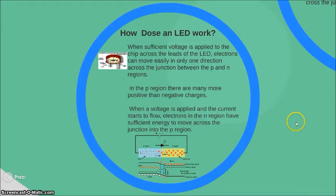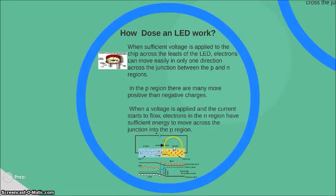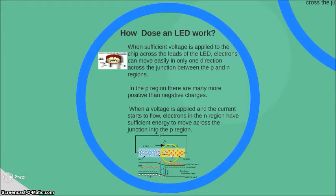When sufficient voltage is applied to the chip across the leads of the LED, electrons can move easily in only one direction across the junction between the P and N region. In the P region there are many more positive than negative charges. When the voltage is applied and the current starts to flow, electrons in the N region have sufficient energy to move across the junction into the P region.